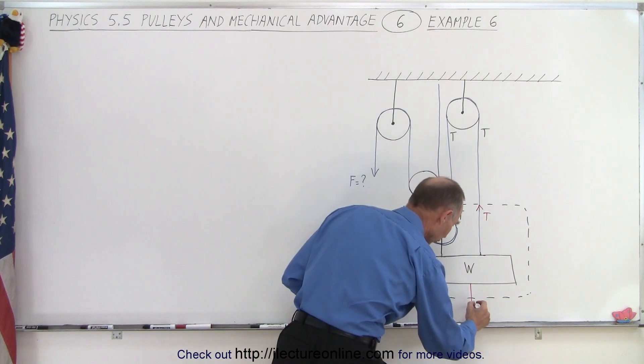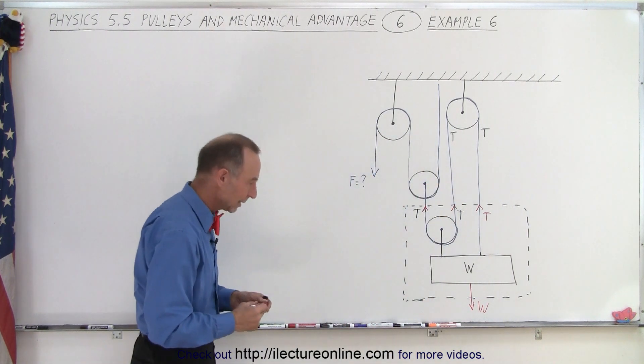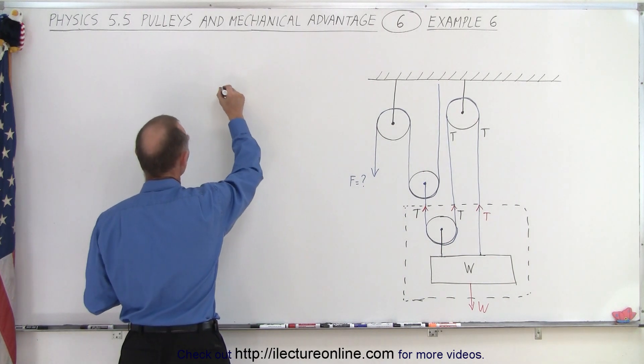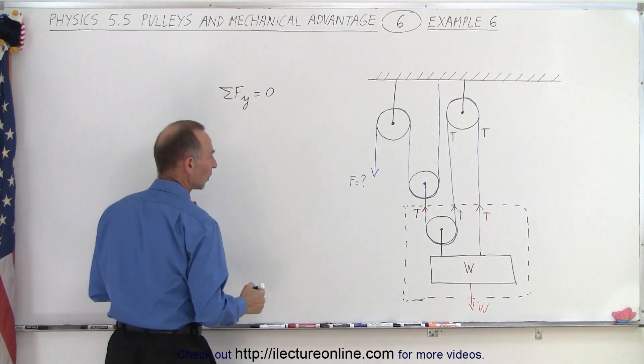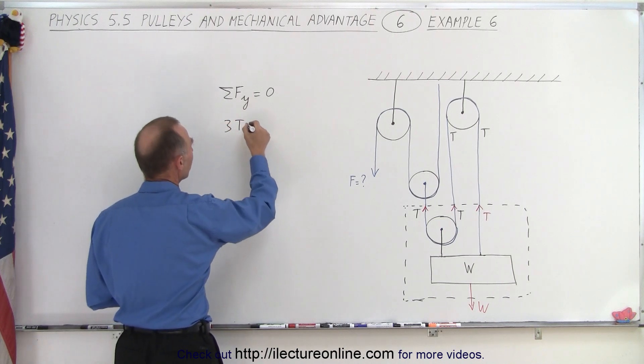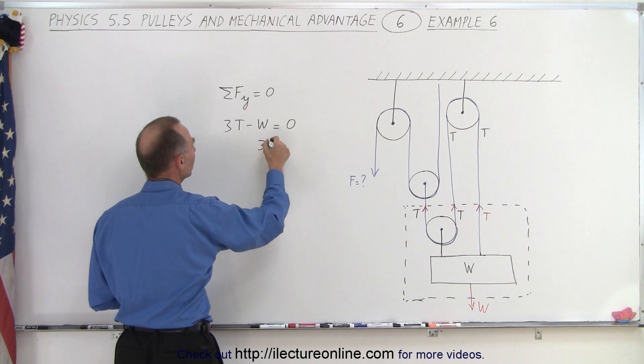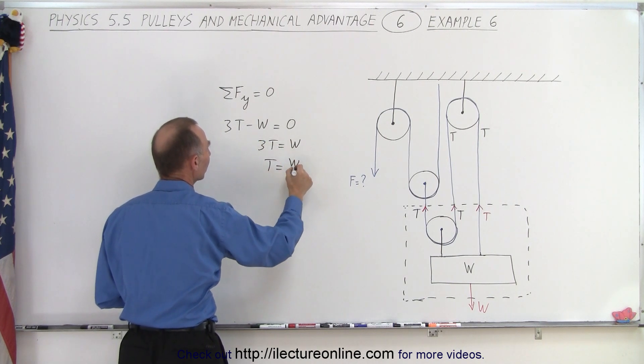And then on the downside here, we have a force pulling this way, and that is the weight of the object. And then we can use the equation that the sum of all the forces in the y direction must add up to zero. That means we have the three forces T up, so three times T in the up direction, minus W in the down direction equals zero, three T equals W, or T equals W divided by three.